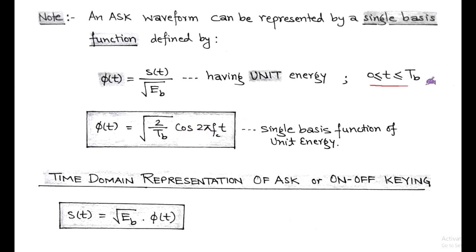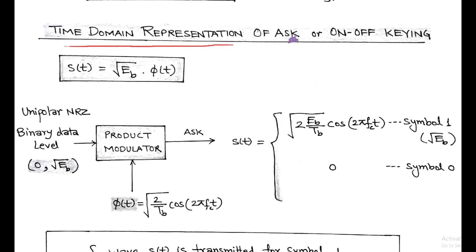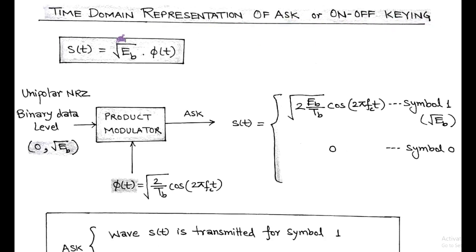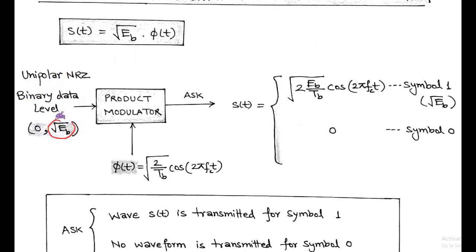This single basis function is defined for 0 ≤ t ≤ TB and has unit energy. Next, we discuss the time domain representation of amplitude shift keying or on-off keying. ASK in terms of the single basis function is simply the product of √EB and φ(t), where √EB is the amplitude of the rectangular pulse representing symbol 1, and φ(t) is the unit energy single basis function. The binary input data with levels 0 and √EB, along with φ(t), is passed through a product modulator, whose output is the ASK wave: S(t) = √(2EB/TB)·cos(2πfct) for symbol 1, and 0 for symbol 0.